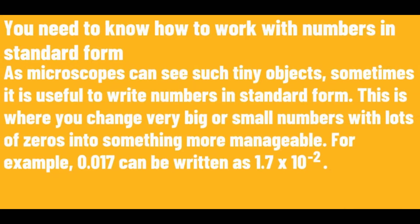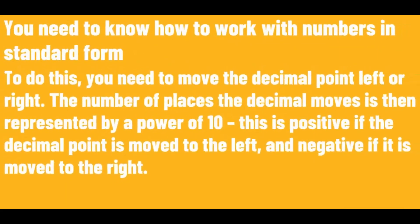You need to know how to work with numbers in standard form. As microscopes can see such tiny objects, sometimes it is useful to write numbers in standard form. This is where you change very big or small numbers with lots of zeros into something more manageable. To do this, you need to move the decimal point left or right. The number of places the decimal moves is then represented by a power of 10. This is positive if the decimal point is moved to the left, and negative if it is moved to the right.